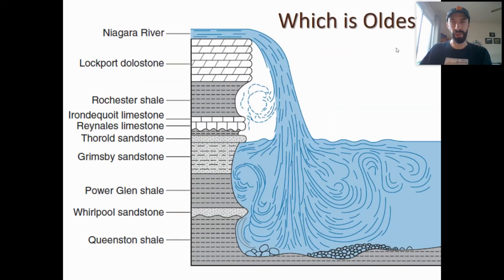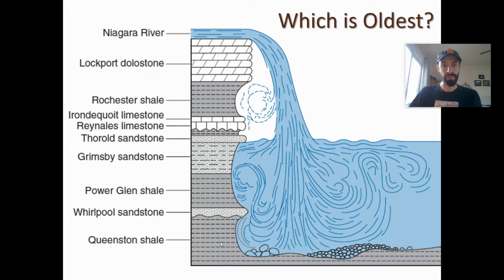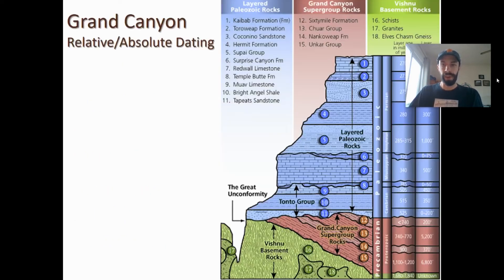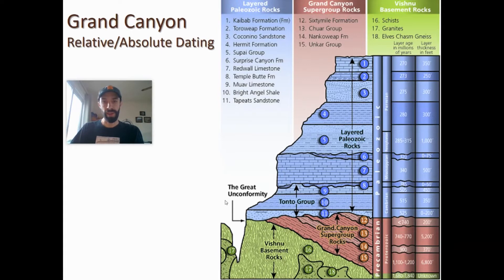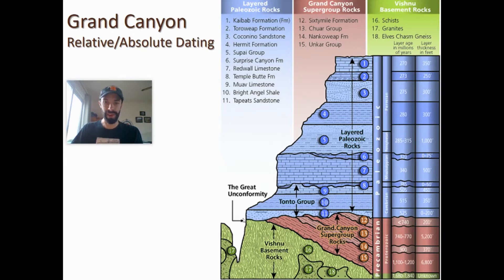You might see a question like this: which one is the oldest? At Niagara Falls, the Lockport Dolostone is on top and the Queenston Shale is on the bottom — the oldest is on the bottom. Same thing with the Grand Canyon, which has a lot more layers. The oldest rocks are at the very bottom where the canyon is, where the river flows through. The Colorado River cut all the way back into time as it cut down through all that rock.